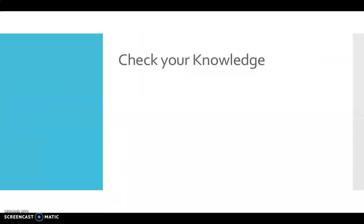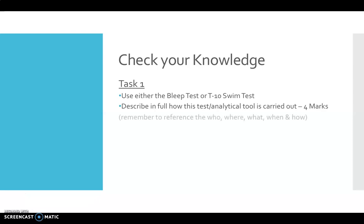At this stage, what we need to do is check our knowledge. So the first task I'm going to ask you to do is using either the bleep test or the T10 swim test, you can choose. You're going to describe in full how this test, we also call an analytical tool, is carried out. I want you to make four descriptive points. The higher guys, I want you to do this in as much detail as possible. Remember to make reference to the who, the where, the what, the when, and the how. We do not need to talk about the why here.